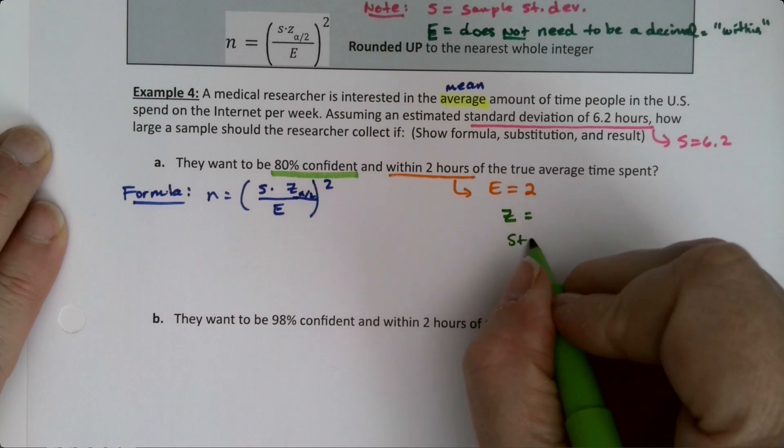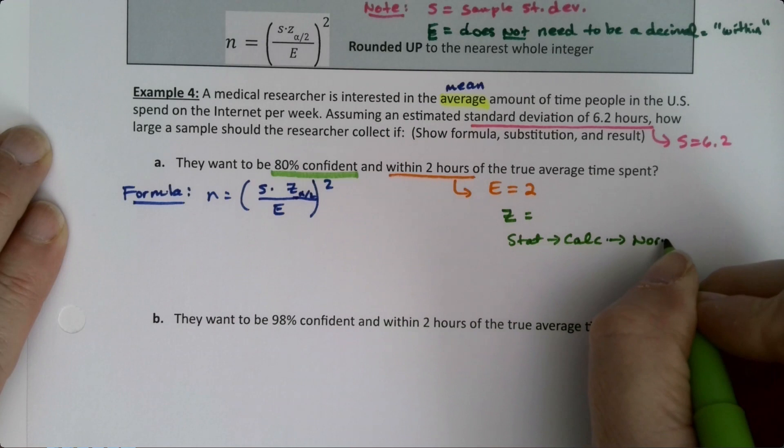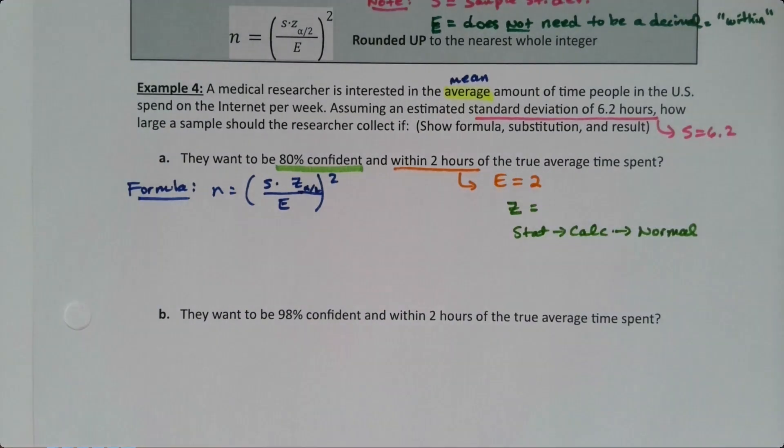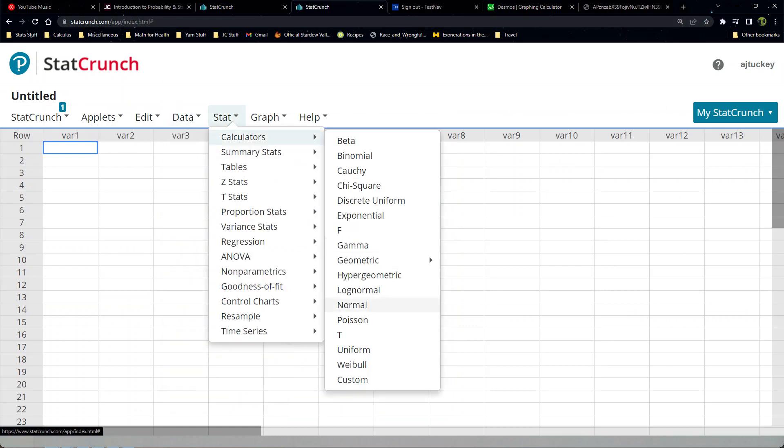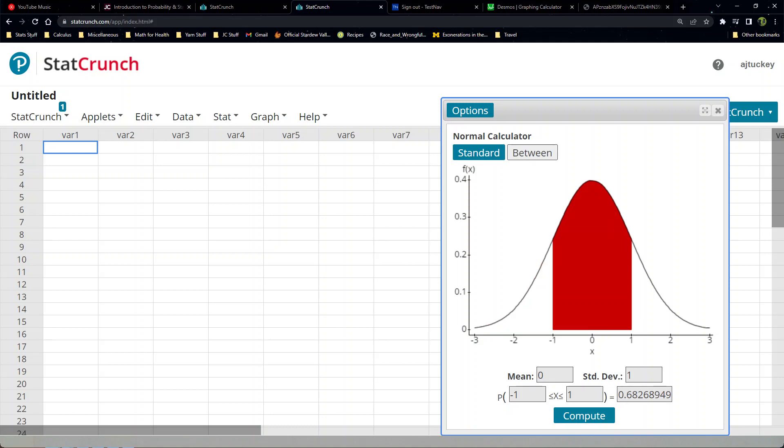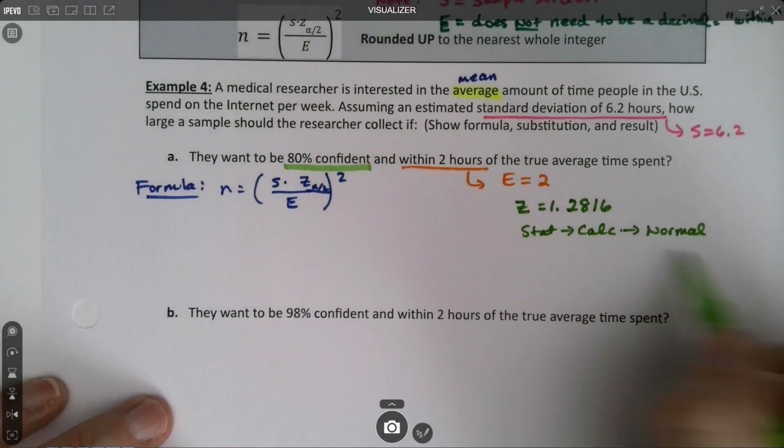How do I find that Z? Well, remember, we go to Stat, Calculators, Normal. And we just enter our confidence level. So let me go grab StatCrunch. It's right here. And hey, I still have stat. I'll just grab it again, just for fun. Stat, Calculators, Normal. Click between and put in your confidence, which was 80. Enter. So 1.2816. 1.2816. There we go. All right. So that's how we found that.